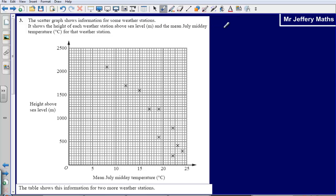This is question 3 from the 2008 calculator paper. Here we're given a scatter graph. It contains information for some weather stations. It shows the height of each weather station above sea level, that information is given in the y-axis, and the mean July midday temperature for that weather station, which is given on the x-axis here.